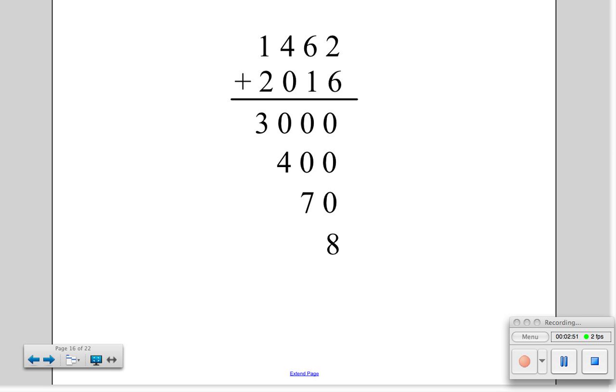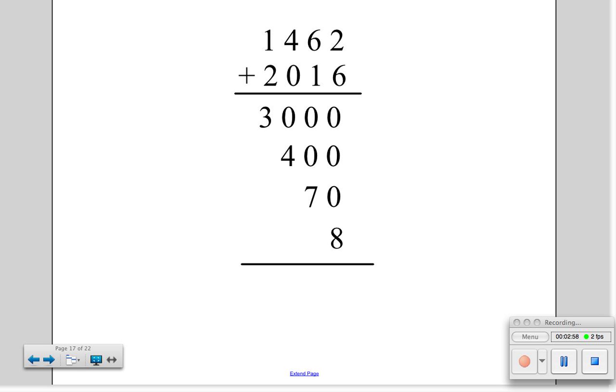And finally, we add our ones column, 2 plus 6 equals 8. Now, in our head, we're going to add 3,000 plus 400 is 3,400. 3,400 plus 70 is 3,470. 3,470 plus 8 is 3,478.